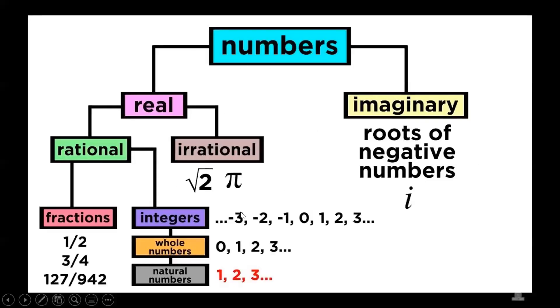Now how about the real number system? The natural numbers, whole numbers, integers, fractions—they are all rational. The rational and the irrational, they are all real. And the real numbers and imaginary numbers, generally they are all called numbers.